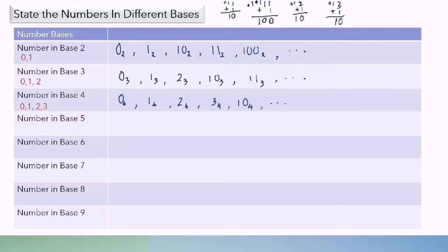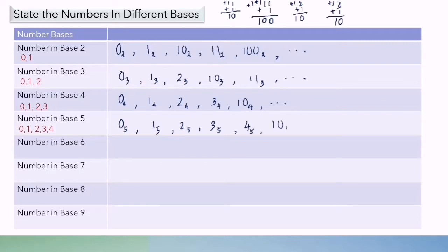Number in base 5: we have digits 0, 1, 2, 3, and 4. If I write it in sequence: 0 base 5, 1 base 5, 2 base 5, 3 base 5, 4 base 5, then 1, 0 base 5, and so on.